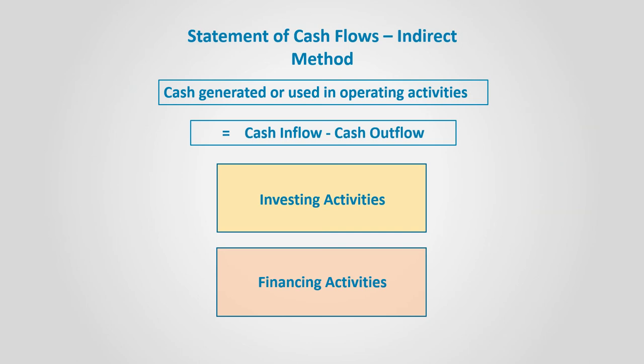Preparing the statement of cash flows using the indirect method. By using the indirect method, we are not going to calculate the cash generated or used from operating activities in the same way as the direct method. However, we are going to still calculate the investing and financing cash flows mostly using the same approach as in the direct method, although sometimes this is also deduced from the balance sheet of two years and other indirect ways.